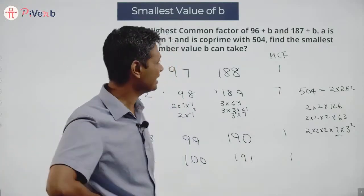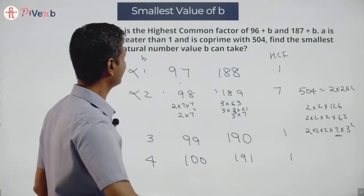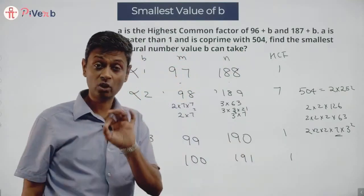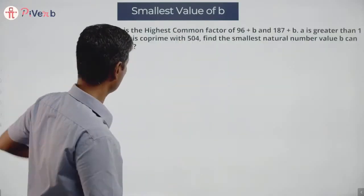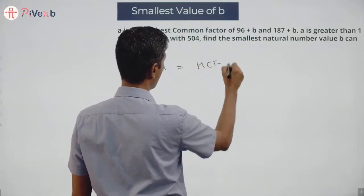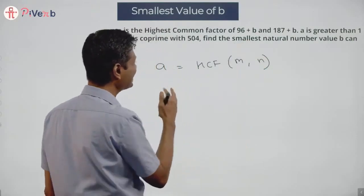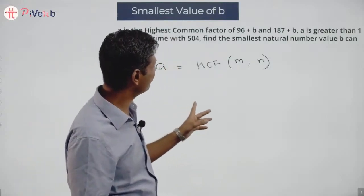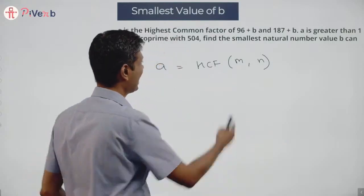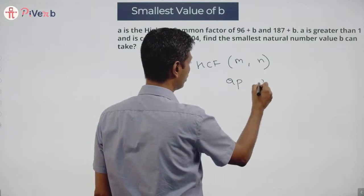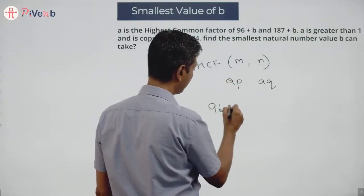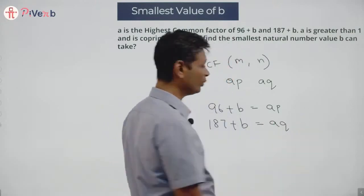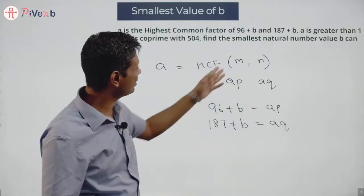A is the HCF of these two numbers, so let me call 96 plus B as M and 187 plus B as N. A is the HCF of M and N, which means A divides M and A divides N. So M equals A times P and N equals A times Q, meaning 96 plus B equals AP and 187 plus B equals AQ.